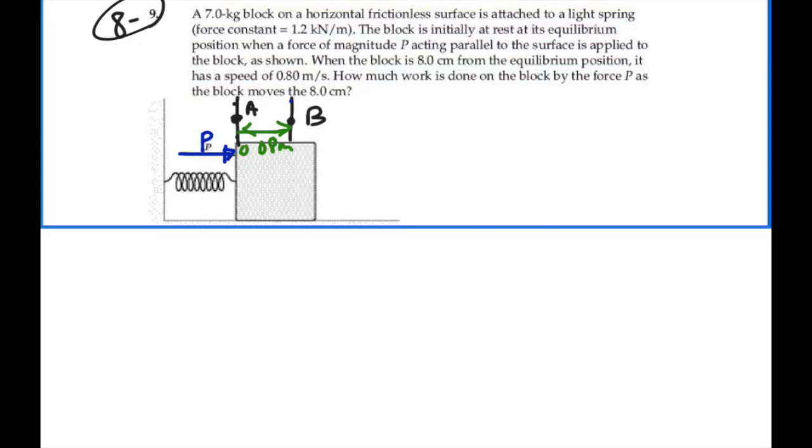Okay. When it reaches point B, the block is going to have a velocity and the velocity is going to be equal to 0.8 meters per second. So that's our velocity at point B. Our velocity at A is going to be 0 because we started from rest.